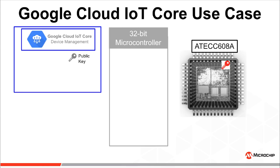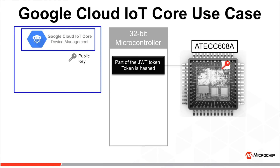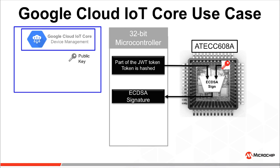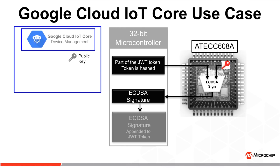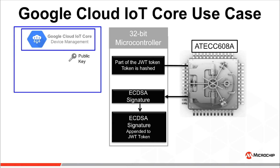Now we switch to the marketplace environment once the finished product is deployed. The microcontroller generates a JWT token, which stands for JSON Web Token. Part of the JWT token is hashed and presented to the secure element. The private key is then used to sign the hash to create an ECDSA signature, which is pushed back to the microcontroller and appended to the JWT token. The private key always stays inside the ATECC608A and never leaves the device. It is protected with anti-tampering and silent-action protections.